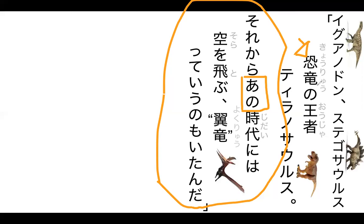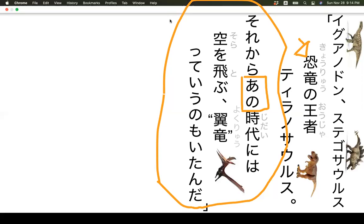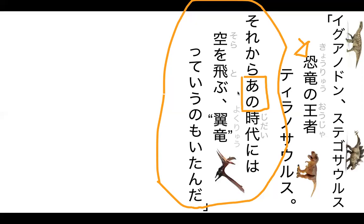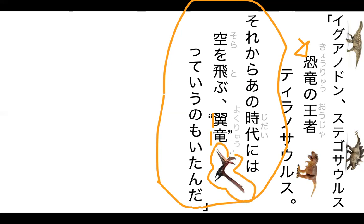Then: そらを とぶ よくりゅう. 'Flying in the sky dinosaur.' よくりゅう specifically means 'winged dinosaur' and refers to the pterodactyl. It's made up of the characters for wing and dragon/dinosaur — so literally 'winged dragon,' which is the pterodactyl.